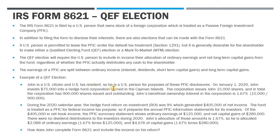Just high-level background: a PFIC is a passive foreign investment company. This is a foreign corporation — a non-US corporation. The activities within the entity make it a PFIC because the assets or the income streams are primarily passive types. So a lot of investment vehicles like hedge funds and private equity companies are going to be PFICs. If a US person owns stock in a PFIC, not only do they have to disclose the holdings on an 8621, but there's very often an income inclusion because it is a PFIC.